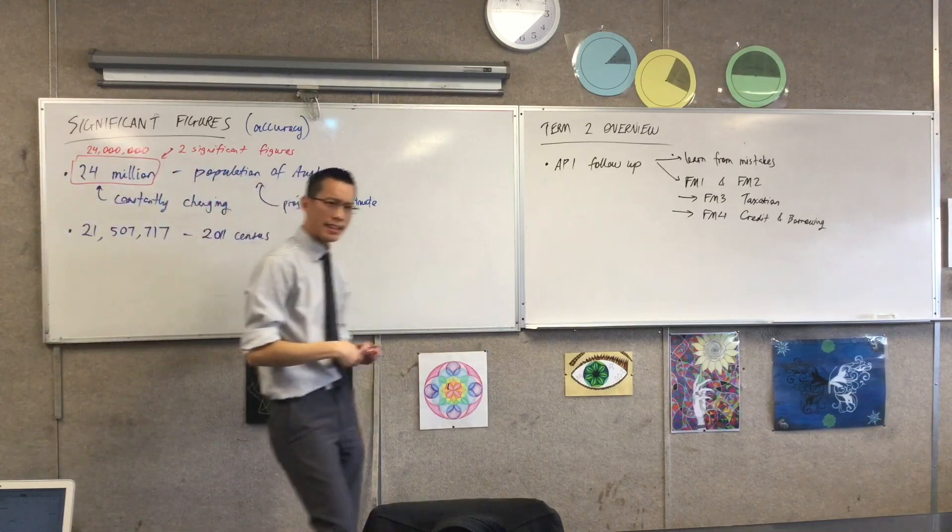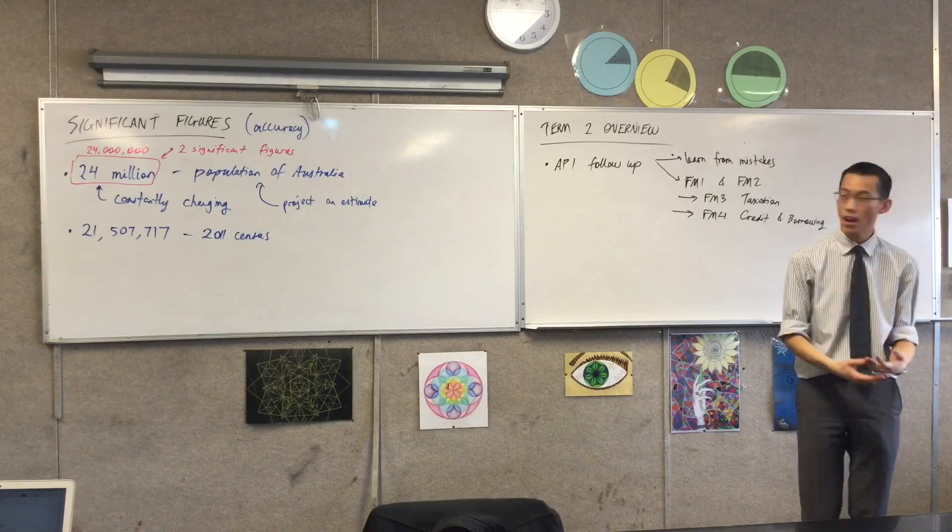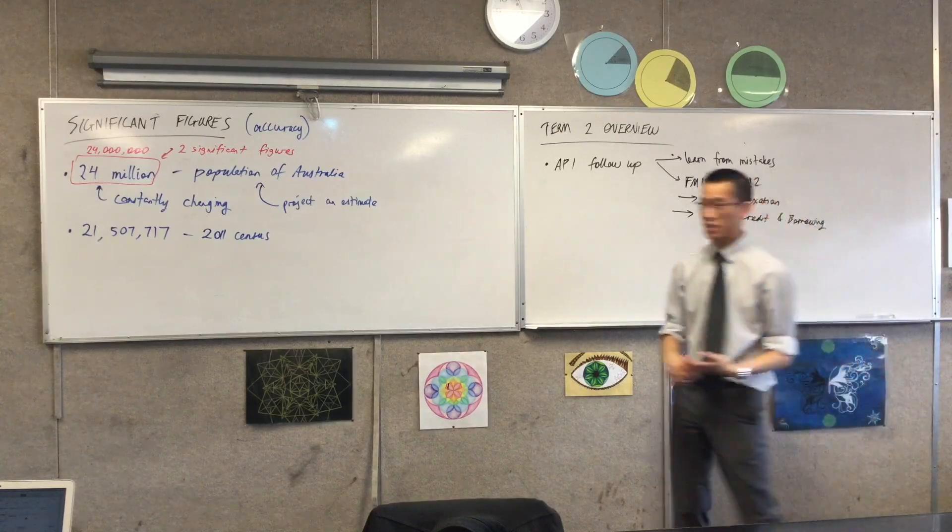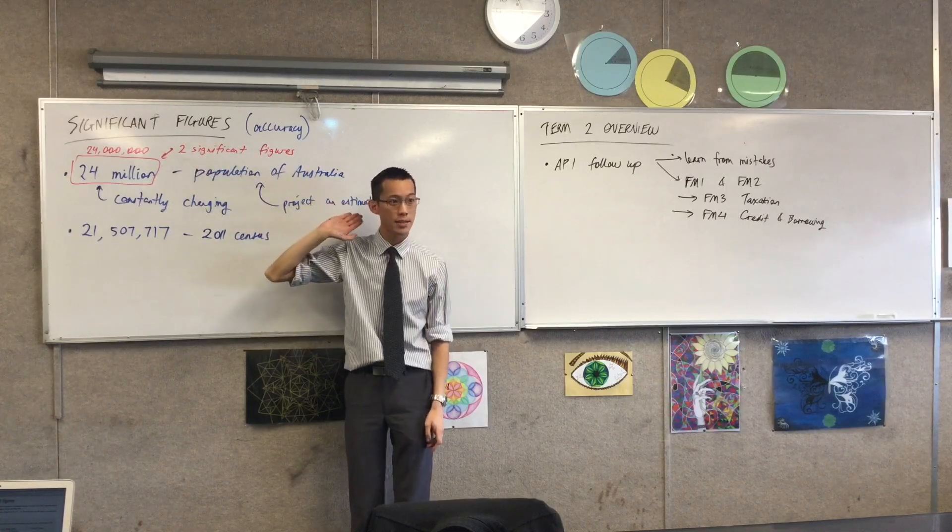Again, I think if we saw this number, we would be highly suspicious. And we say, really? Is it exactly that? We can't know that that's going to be the exact number, so we can only assume that there are two significant figures. Does that make sense?